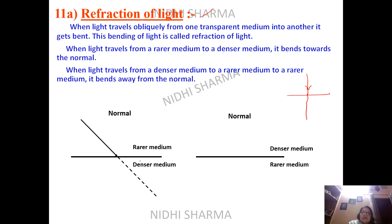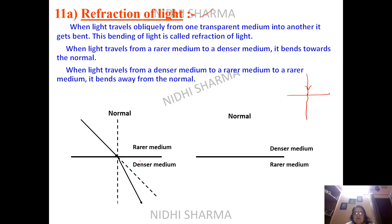Originally the ray has to go straight, but when bending occurs it will be towards the normal, because when coming from rarer medium, light has more speed. When we enter the denser medium, the speed reduces. If you draw a normal and compare angle r and angle i, you can see that angle i is not equal to r — the refracted angle will be less than the incident angle.